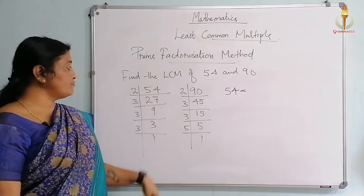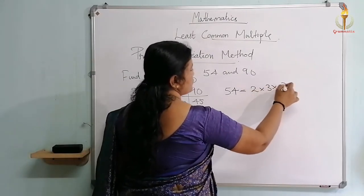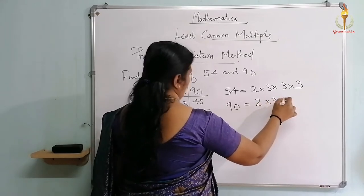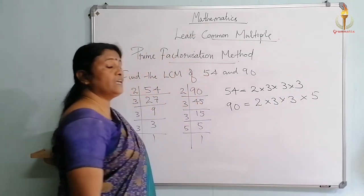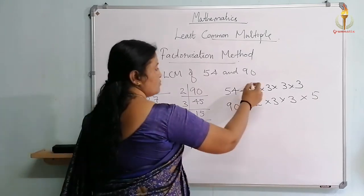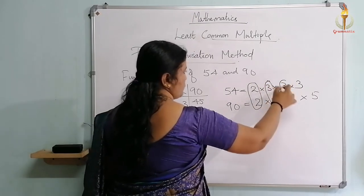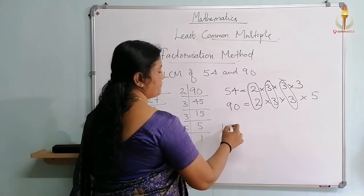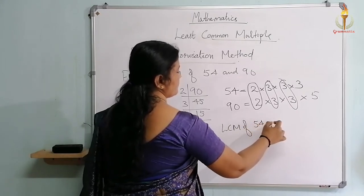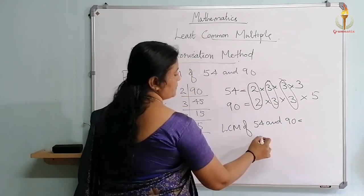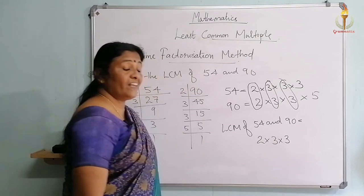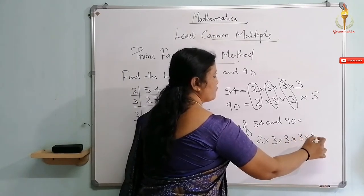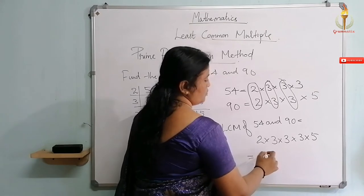Write the prime factors: 54 = 2 × 3 × 3 × 3, and 90 = 2 × 3 × 3 × 5. Now pair them up — the first pair, second pair, third pair. LCM of 54 and 90 is equal to the paired numbers: 2 × 3 × 3, and then the unpaired numbers: 3 × 5. That gives 270. So 270 is the LCM of 54 and 90.